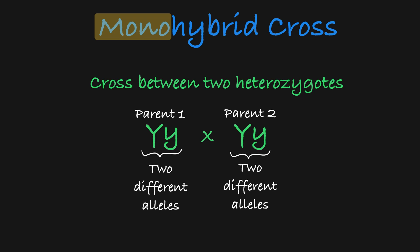In this case, mono, meaning one, refers to the single gene, and hybrid, meaning mix, refers to the fact that each parent has two different alleles.